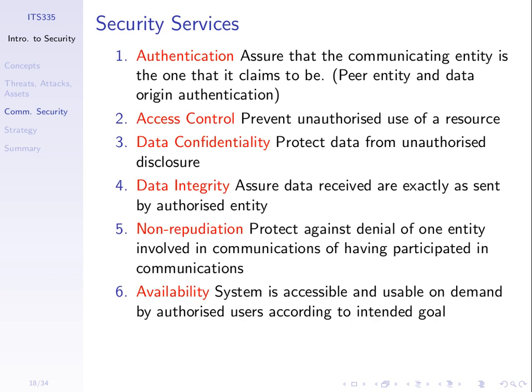There are six main services we may try to provide. Authentication: make sure that the entity we're communicating with is who they say they are — whether computer-to-computer or human-to-computer, we check that this entity is not pretending to be someone else. Access control: controlling access to resources, like blocking people from accessing the printers inside SIT or allowing them to access one server but not another. Data confidentiality: keeping our messages private and secret.